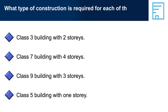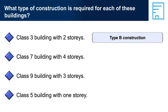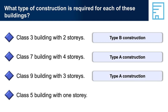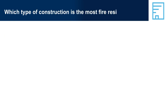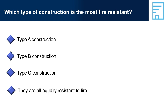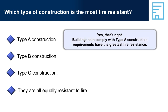What type of construction is required for each of these buildings? A Class 3 building with two storeys is Type B construction. A Class 7 building with four storeys is Type A construction. A Class 9 building with three storeys is Type A construction. A Class 5 building with one storey is Type C construction. Which type of construction is the most fire-resistant? The correct answer is Type A construction — buildings that comply with Type A construction requirements have the greatest fire resistance.